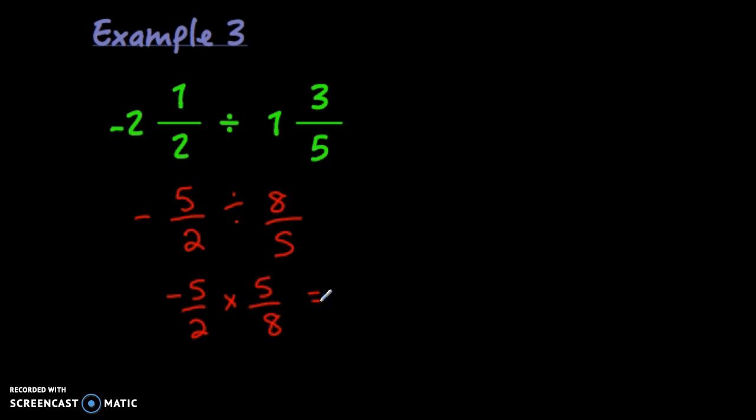This time, it looks like we have no common factors whatsoever. 5 and 8, 5 and 2 don't have common factors. So we're just going to multiply straight across. Negative 5 times 5 is negative 25. 2 times 8 is 16.